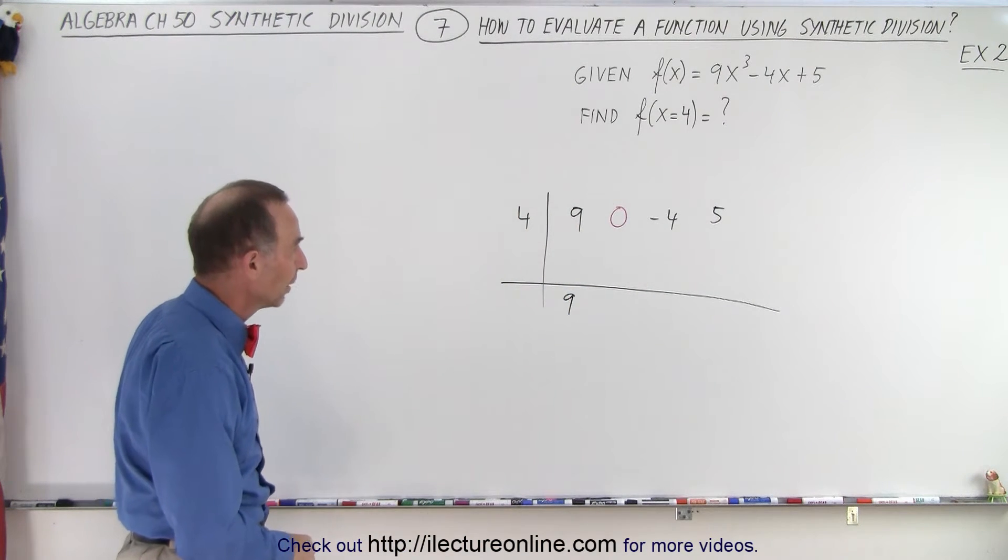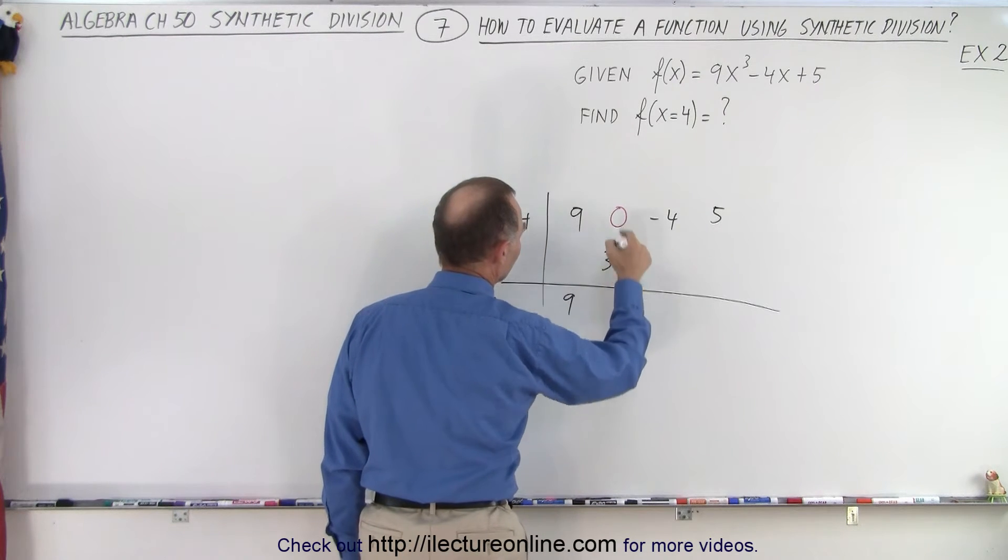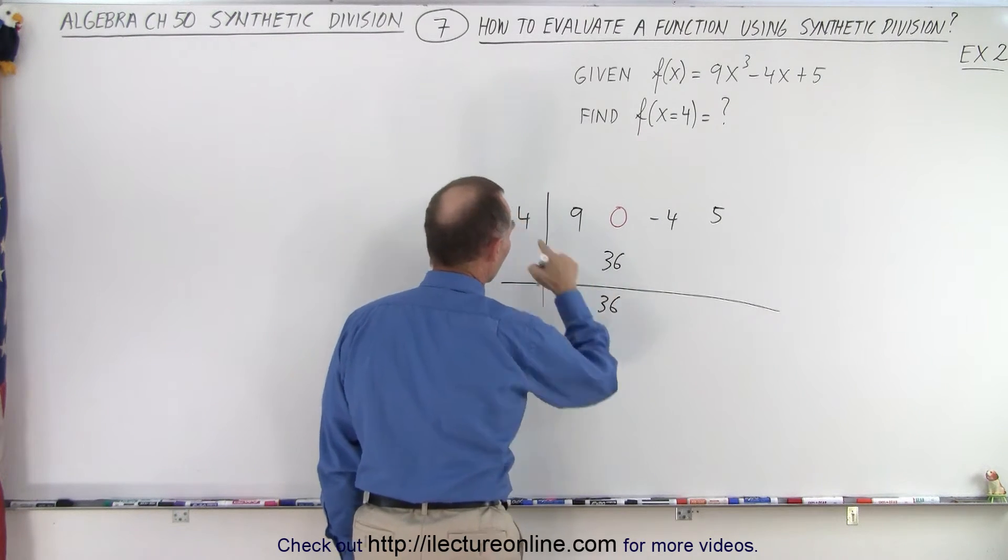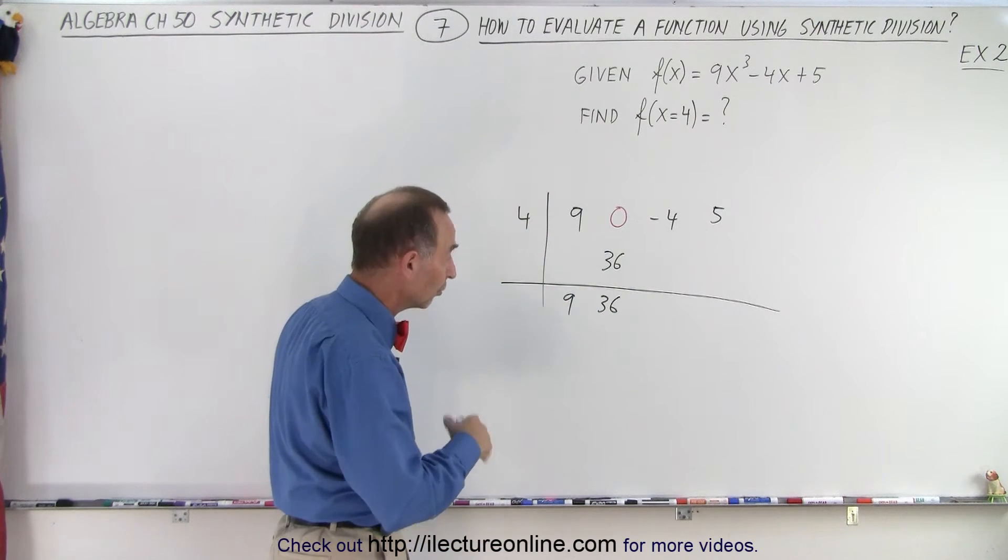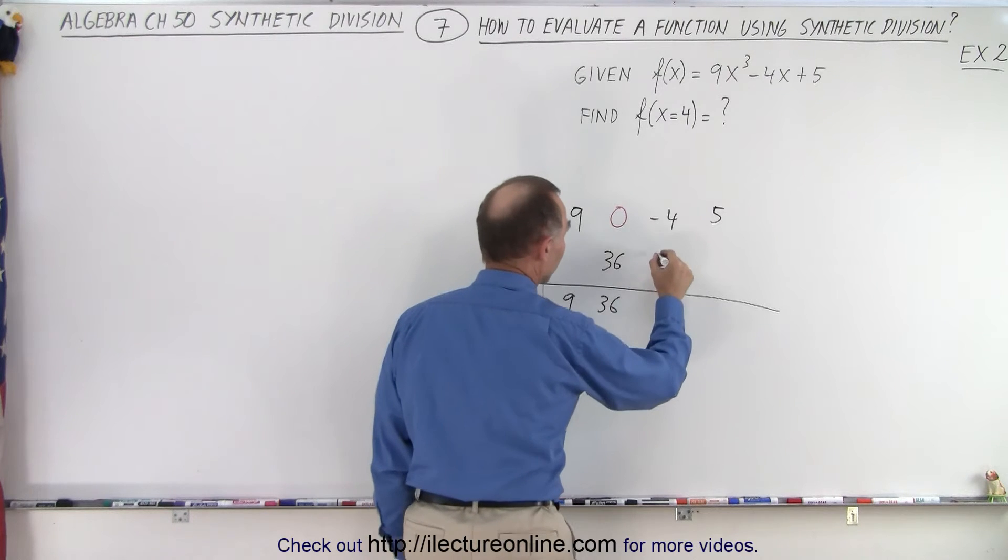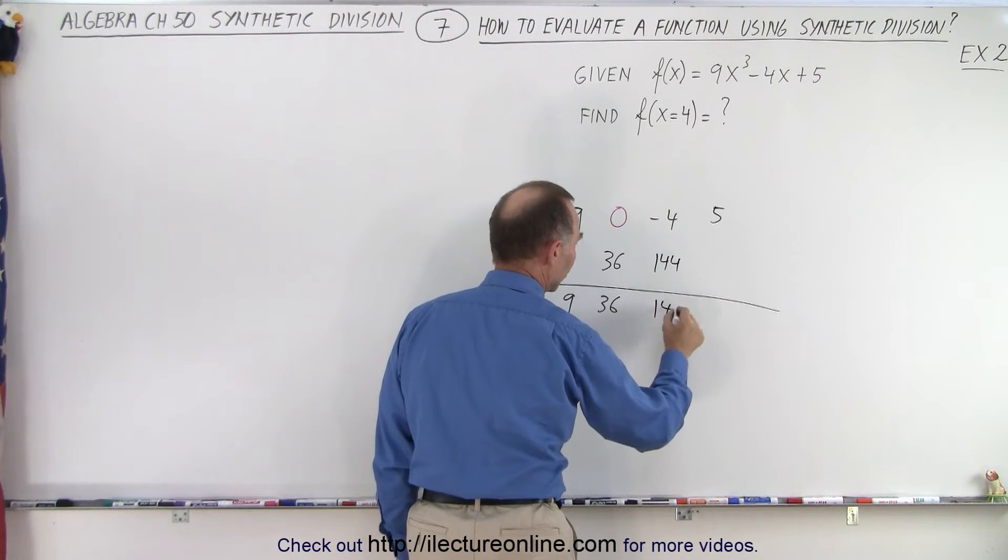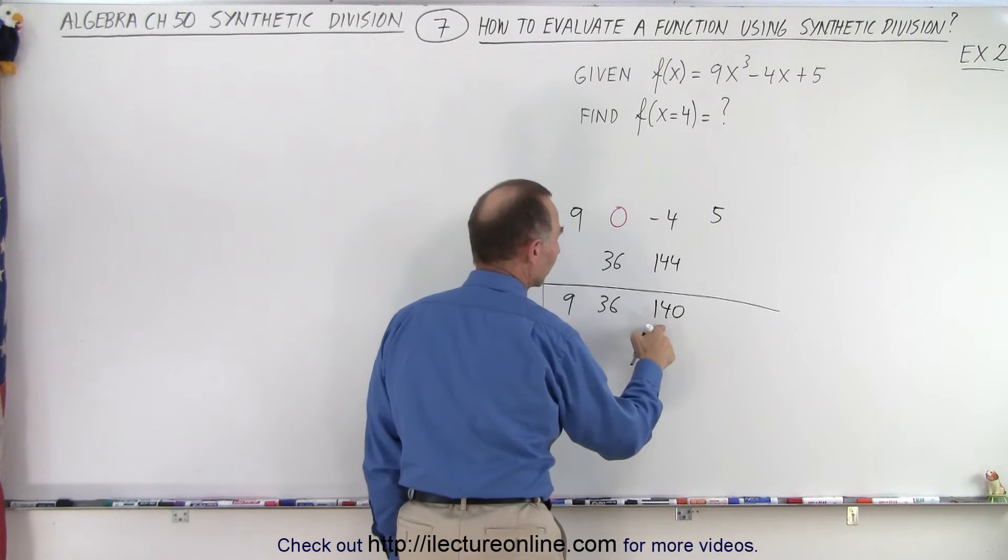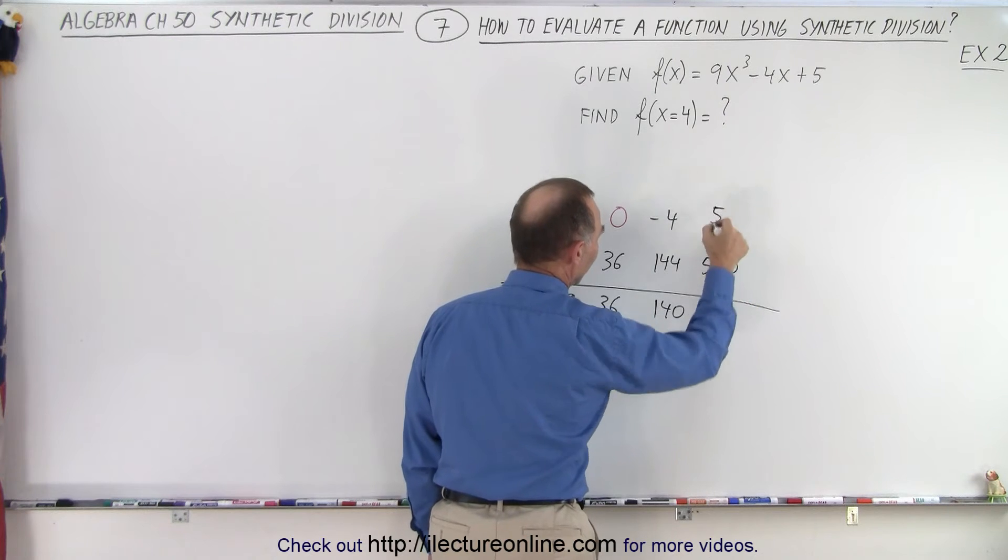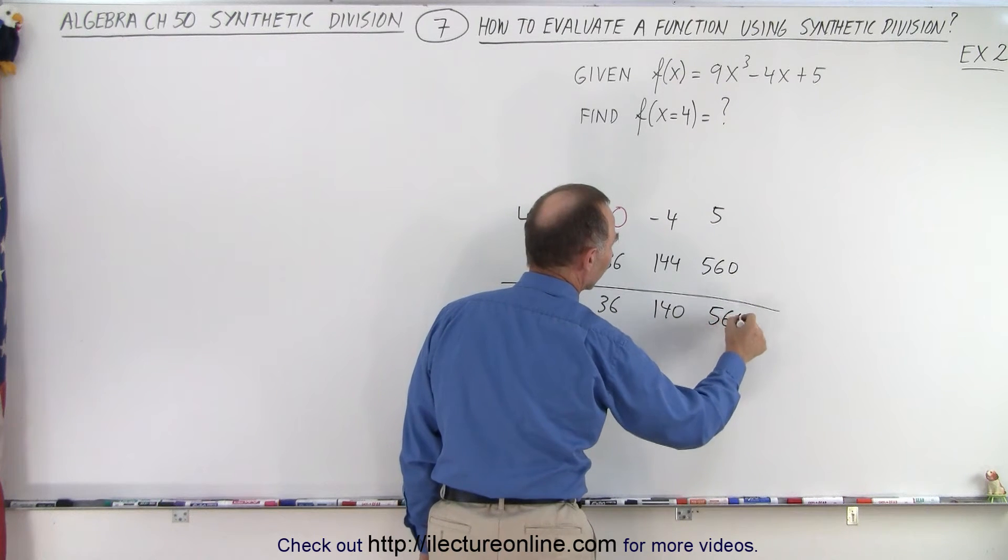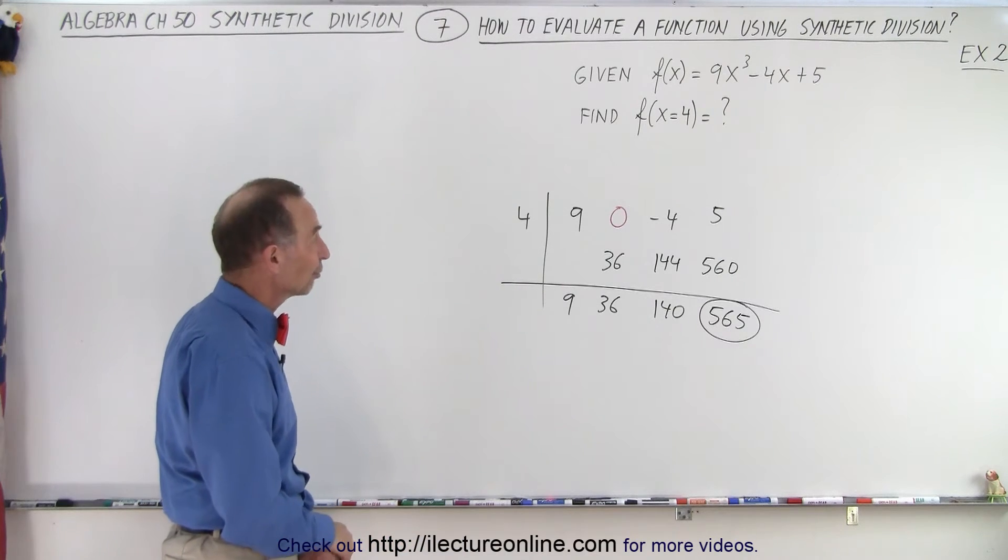See how quick and easy it is just to set it up. So now we go to the process. Four times nine is 36, plug 36 there, add them together you get 36. Four times 36, well twice 36 is 72, double that you get 144. You put 144 there and you add the two numbers you get 140. Four times 140, well that's 400 plus 160, that's 560, plus five we get 565.